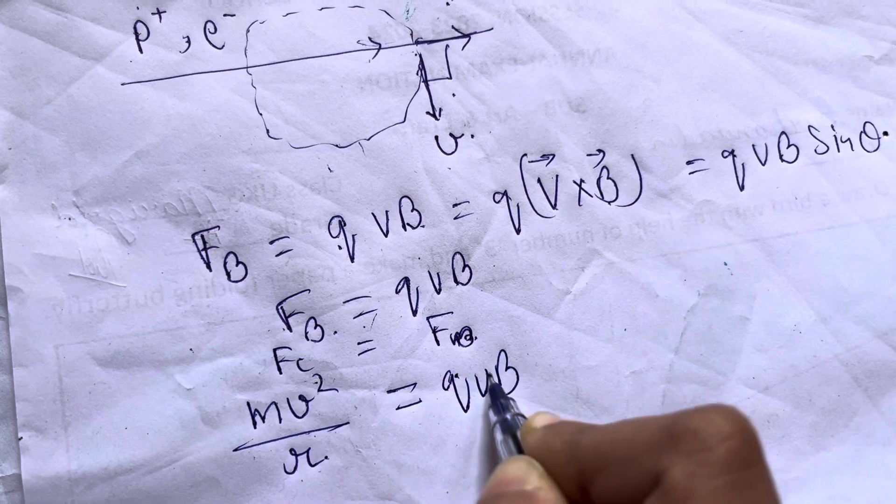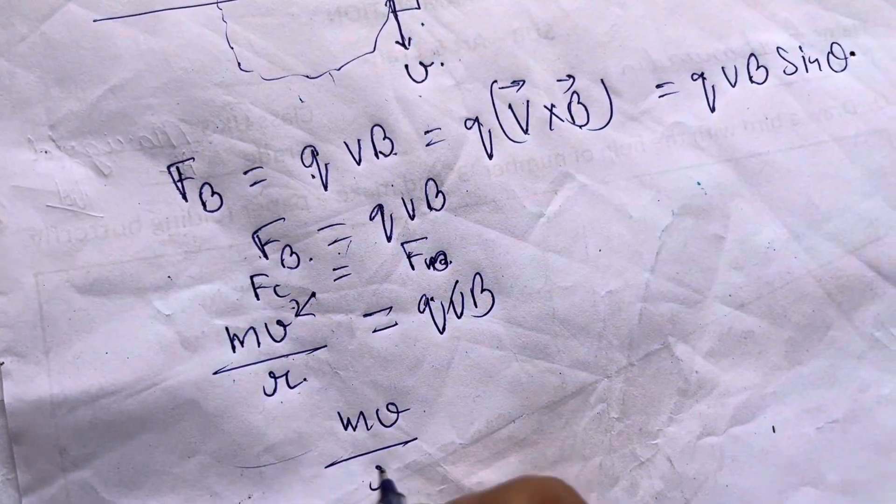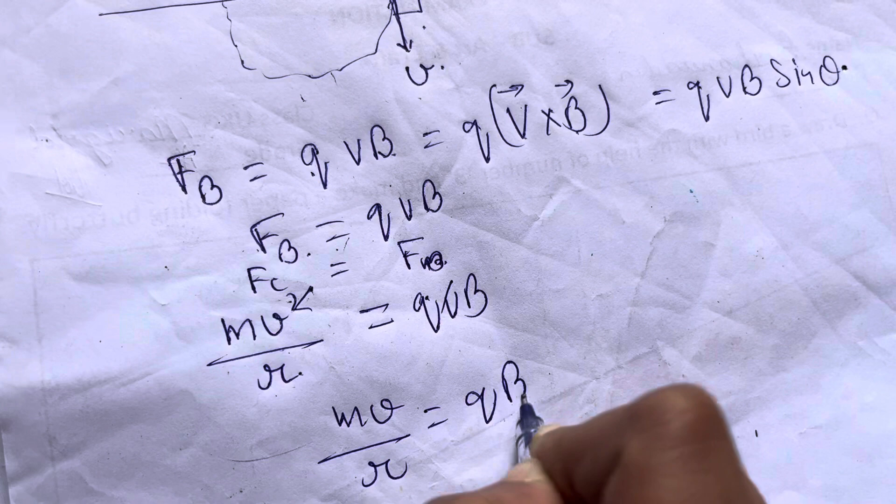Which equals Q V B. Now cancel V from both sides. So here, what is M V by R? Which equals Q B.